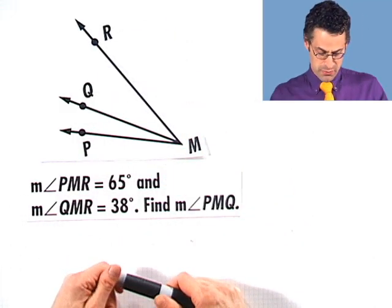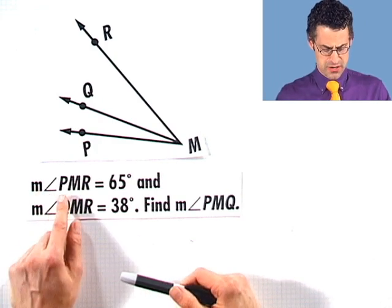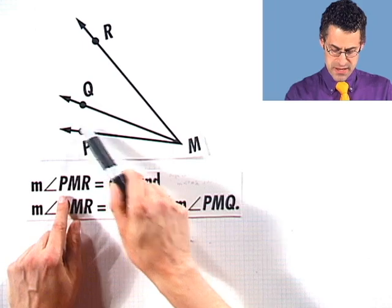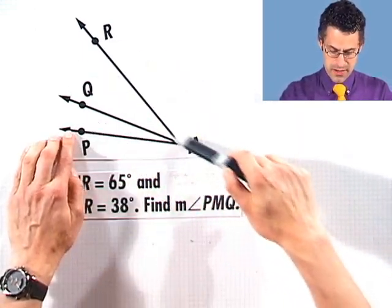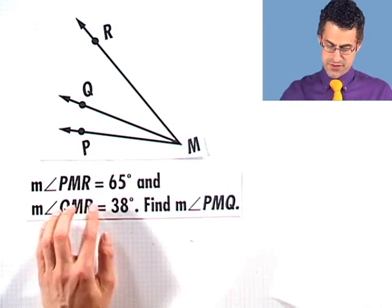Hey, here's a picture of a bunch of angles, and we're told a lot of things about them. The first thing we know is that the measure of angle PMR, so that's that really big angle there, has measure 65 degrees.